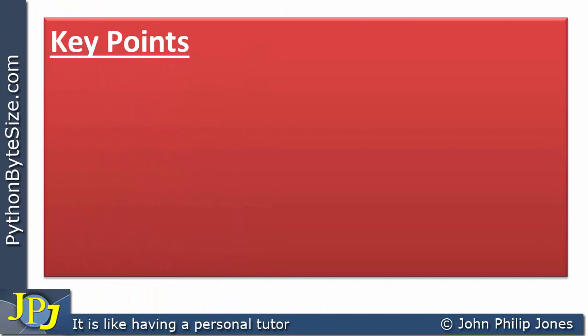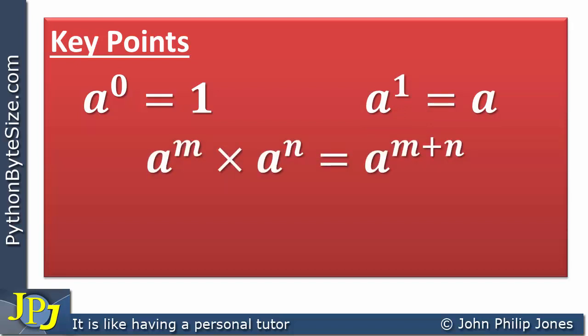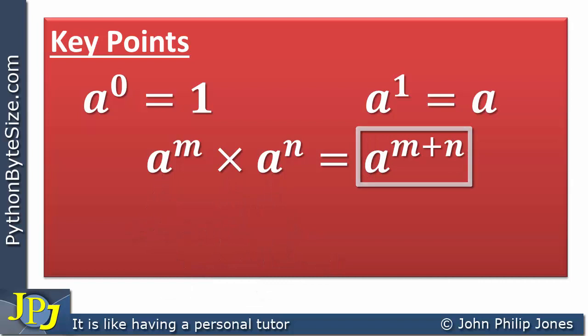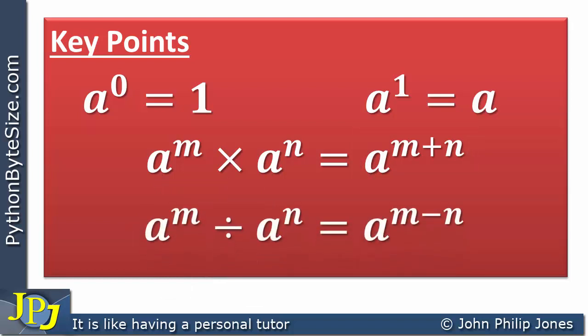Let's now consider the key points that we've learned from this video and the preceding one in this playlist. We know that a to the power 0 is equal to 1. Anything raised to the power 0 is 1. We know that a raised to the 1 is going to be a. In the last video, we saw that when you're multiplying numbers of the same base, then you can add the indices. And this video has looked at this one, which shows if you have numbers of the same base and you're dividing them, then you can subtract the indices, making sure you write down the base in this position.